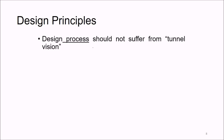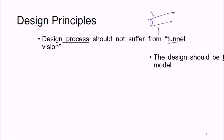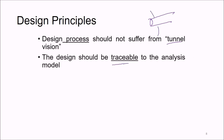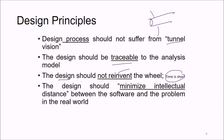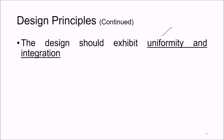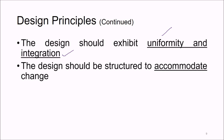Design principles state that the design process should not suffer from tunnel vision — it needs to be broad, not blocked from seeing other aspects. The design should be traceable to the analysis model. The design should not reinvent the wheel, since time is limited; for this we use patterns. The design should minimize the intellectual distance between the software and the real-world problem you are solving. The design should explicitly show uniformity and integration, and should be structured to accommodate change.